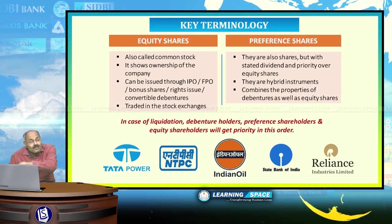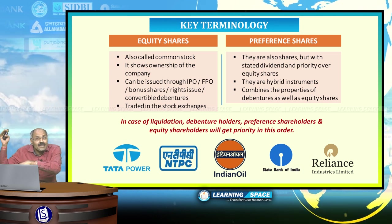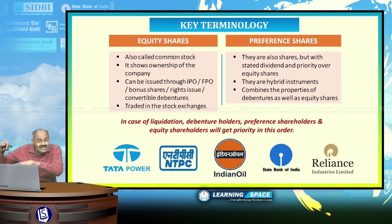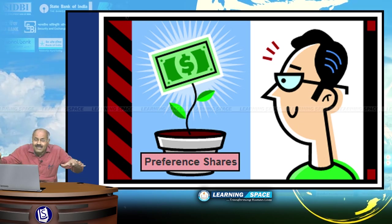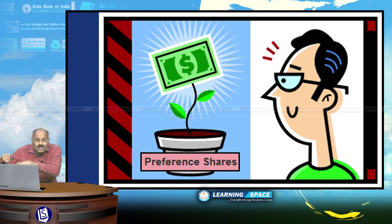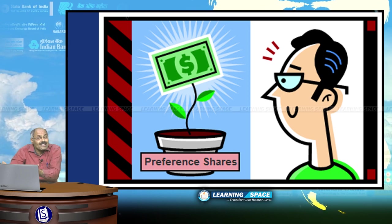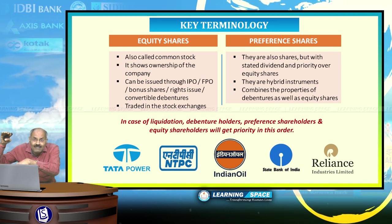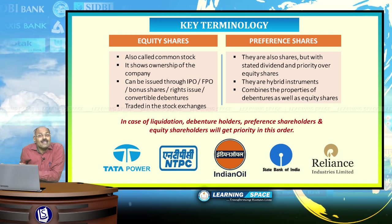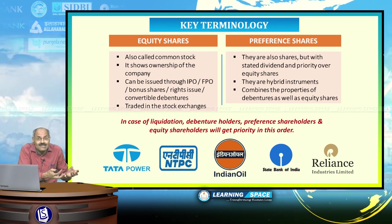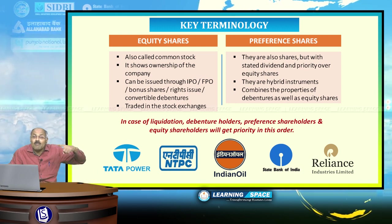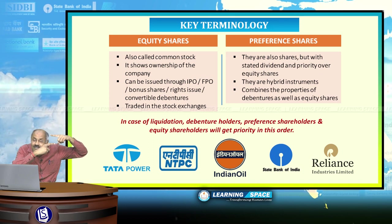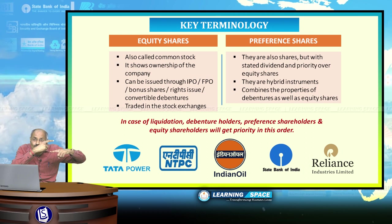Preference shareholders will get a stated dividend whether the company is in profit, loss, or even liquidation. When a company goes into liquidation, the priority order is: debenture holders get first preference on whatever is left, followed by preference shareholders, then equity shareholders. So this is the priority when a company goes into liquidation. Equity shares are pure ownership instruments, preference shares are hybrid instruments, while debentures and bonds are debt instruments where you are simply giving a loan.